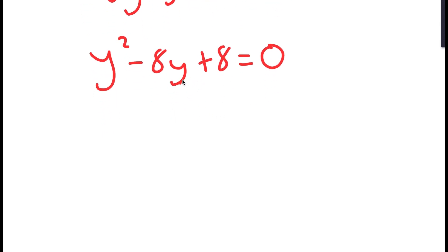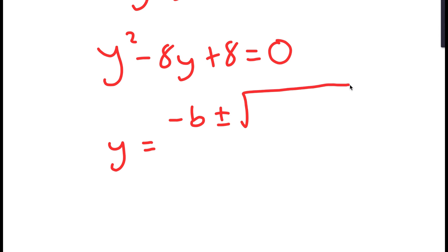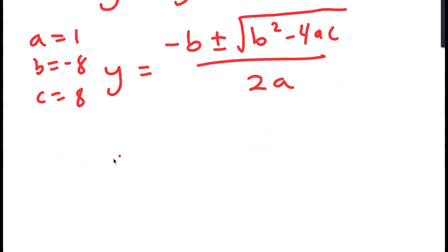Now to solve this, I'm going to use the quadratic formula, which is negative b plus or minus the square root of b squared minus 4ac, all over 2a. In this case, a is 1, b is negative 8, and c is 8.